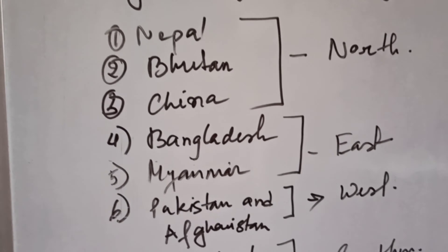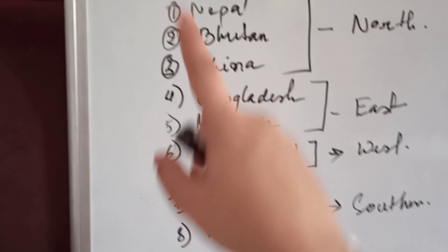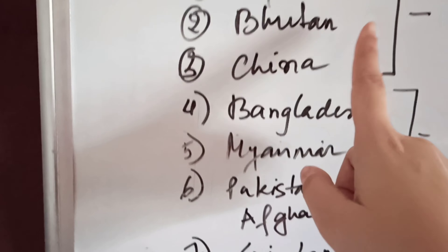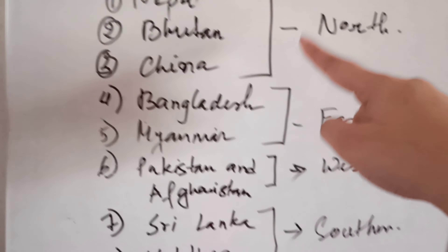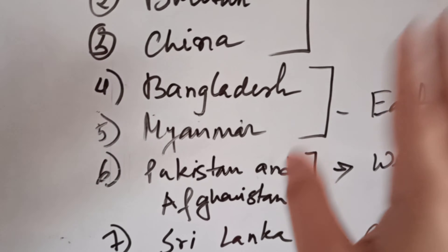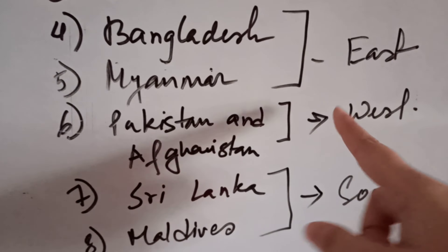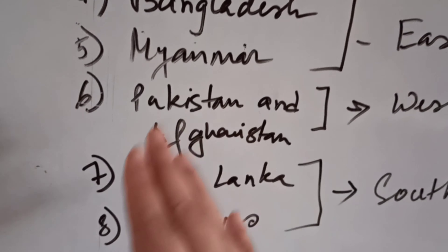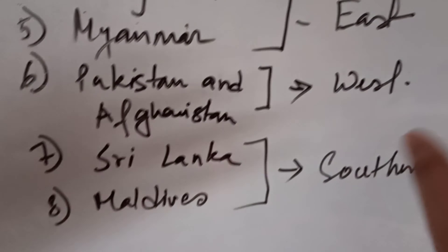So these are the 8 neighbouring countries which are sharing their boundary with India. Nepal, Bhutan, and China are the 3 countries where India shares its boundary in the northern portion. Bangladesh and Myanmar are the countries where India shares its border in the eastern direction. Pakistan and Afghanistan share their boundary in the western section, and Sri Lanka and Maldives share their boundary in the southern portion of India.